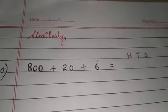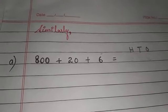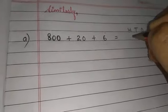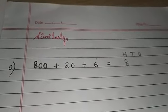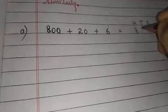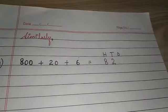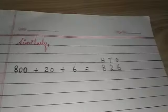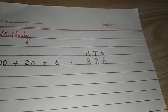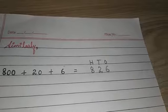Now see, 800 means 8 will go to hundreds group. 20 means 2 tens. 6 means 6 will go to unit group name or unit group column.